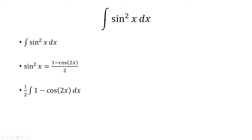So we're going to plug that into the integral, and I'm going to factor out the 1 half. So now I need to integrate 1 minus cosine of 2x, which is a lot easier.